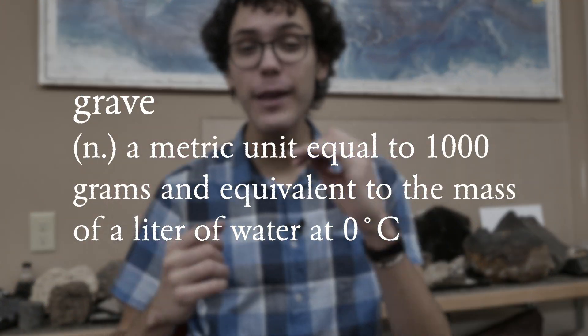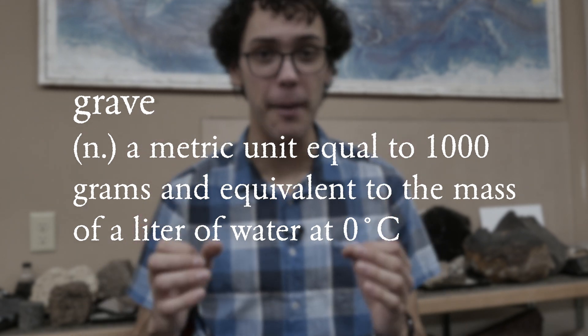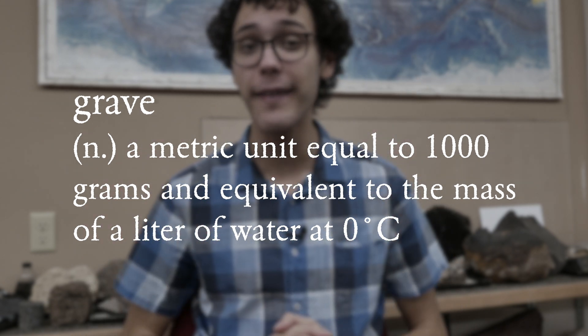Our story starts all the way back in 1793, when the French were sick and tired of imperial units. So they created the grav, equal to exactly 1,000 grams, and defined as the mass of a liter of water.